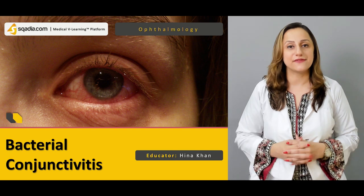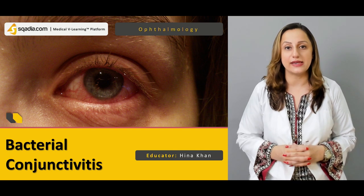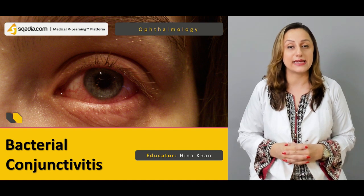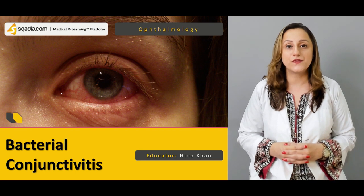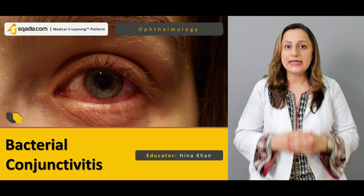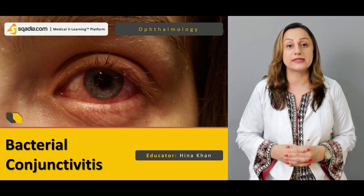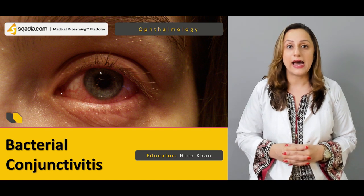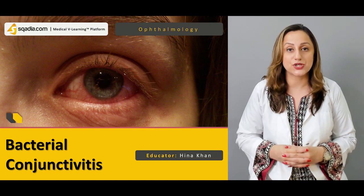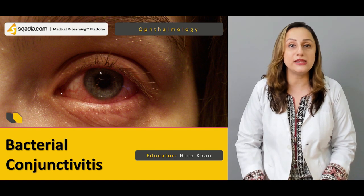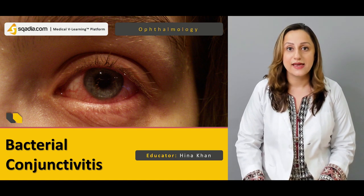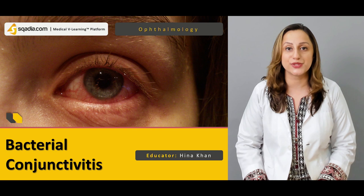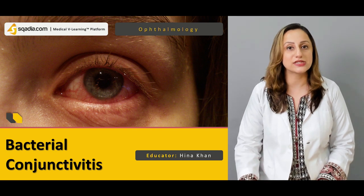So what is conjunctiva? Conjunctiva is basically the mucous membrane that is covering the innermost layer of the eyelids, as well as it has a bulbar portion which is basically covering the eyeball. If there is any inflammatory or infectious state that arises in this conjunctiva due to bacteria in the surrounding environment, or even nosocomial infections — that is, hospital-acquired infections — that can give rise to a condition known as bacterial conjunctivitis.